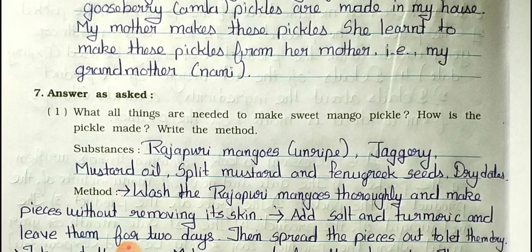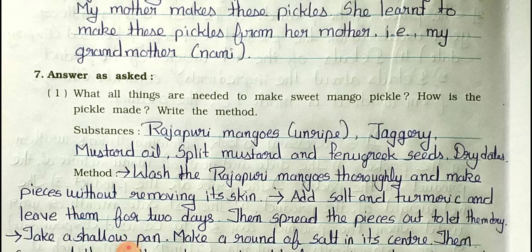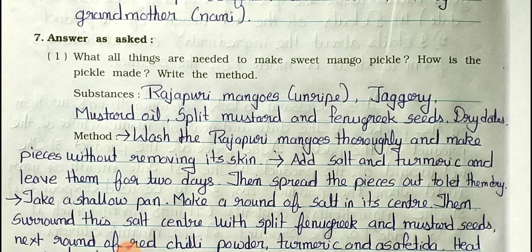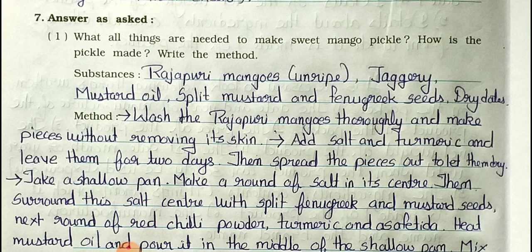Main question 7, part 1: What ingredients are needed to make sweet mango pickle? Ingredients needed: Rajapuri mangoes (unripe), jaggery, mustard oil, split mustard and fenugreek seeds, and dry dates.